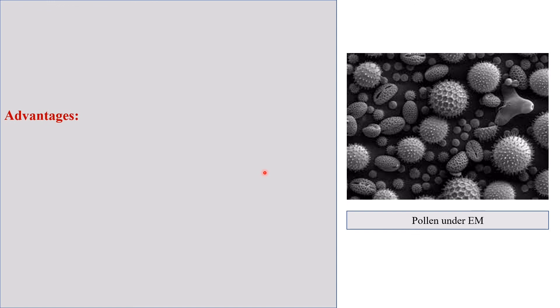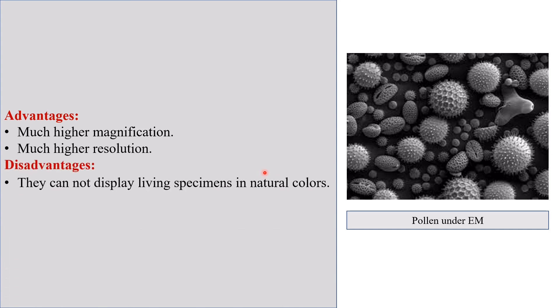Two major advantages of electron microscope are it has much higher magnification and much higher resolution. The only disadvantage of electron microscope is that it cannot display living specimens in natural colors.